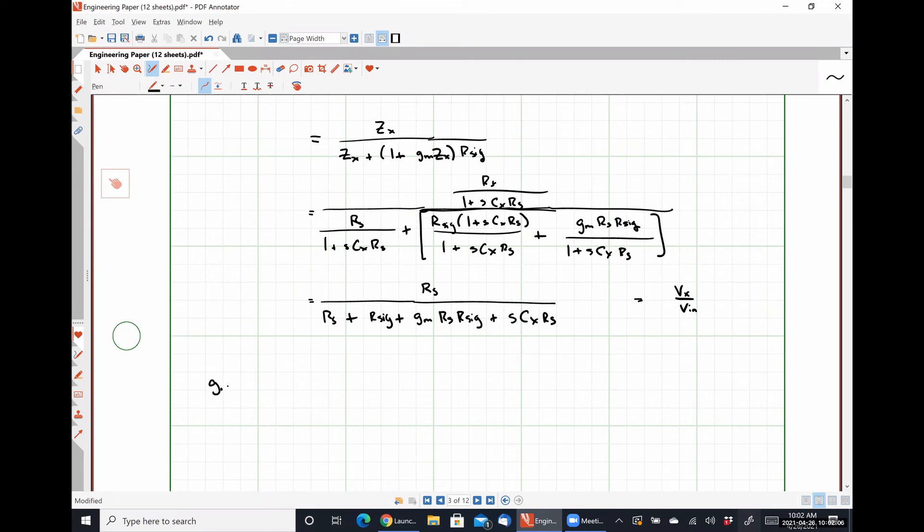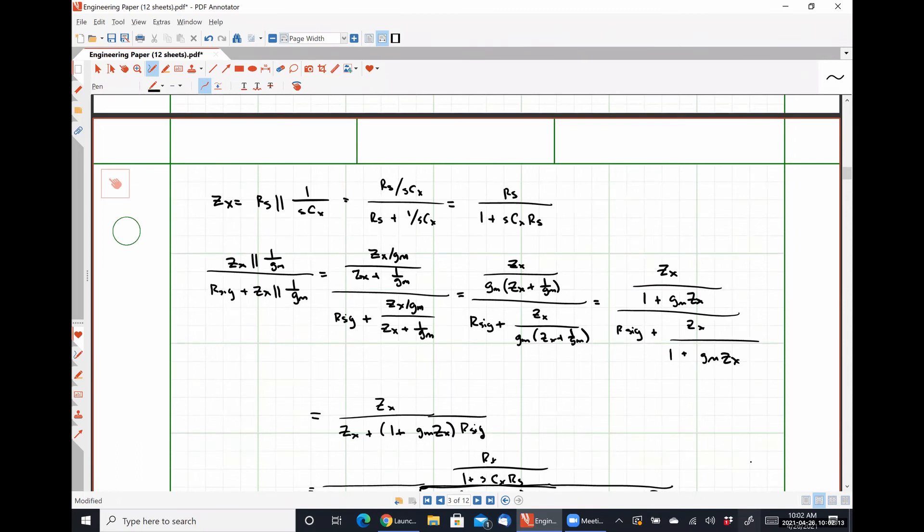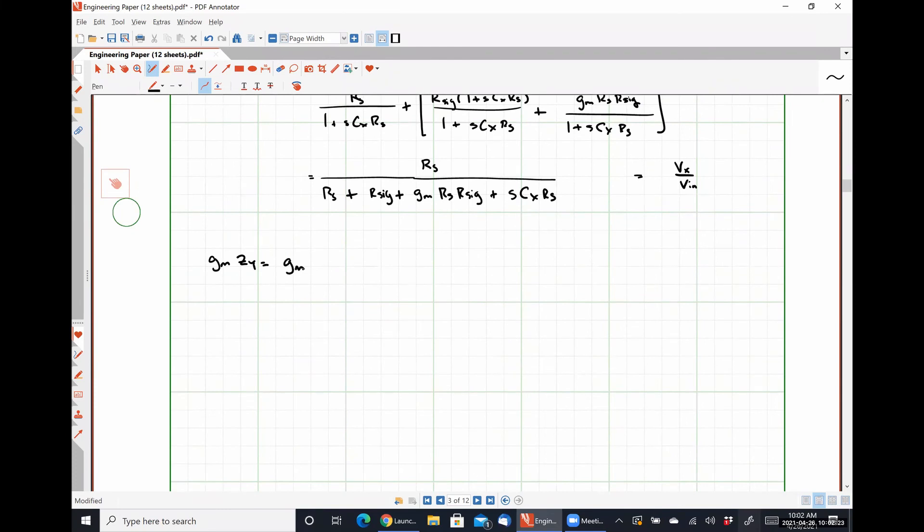My second transfer function I'm going to have GM times ZY, and ZY is going to do almost the exact same thing as ZX does, right? Because ZY is a resistance in parallel with a capacitance. So that means that I'm just going to have GM times RD divided by one plus SCY times RD, which looks like GM RD over one plus SCY RD. This bit is the Vout over VX portion of our transfer function.